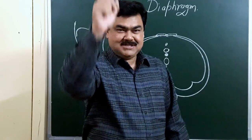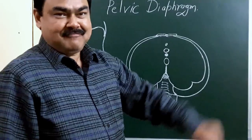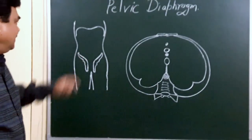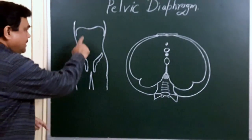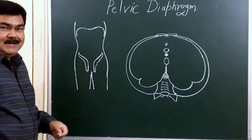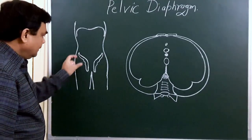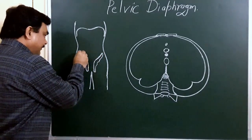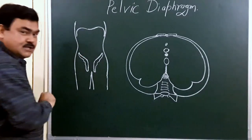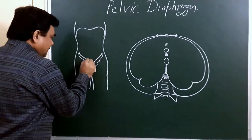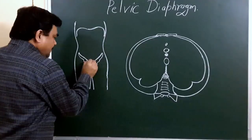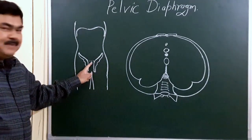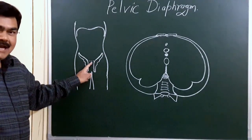I will discuss the pelvic diaphragm. In this diagram you can see the abdominal cavity and the iliac fossa. This is the pelvic brim, also known as the inlet of the pelvis.